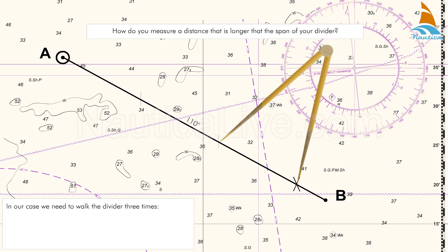In our case we need to walk the dividers three times. That makes 3 times 10 miles equaling 30 miles.